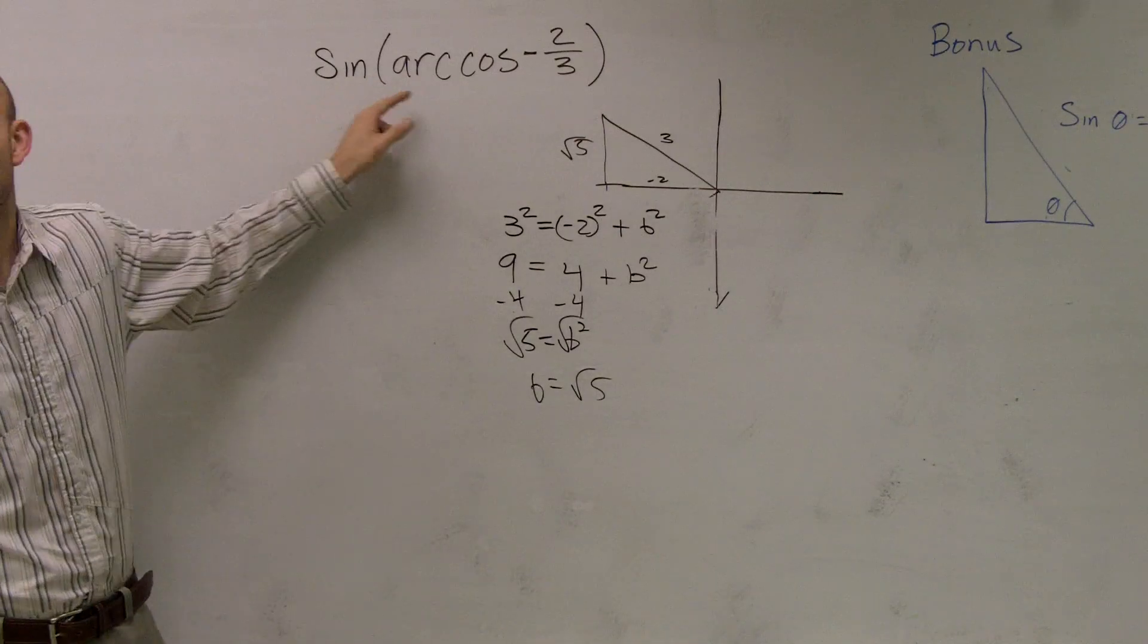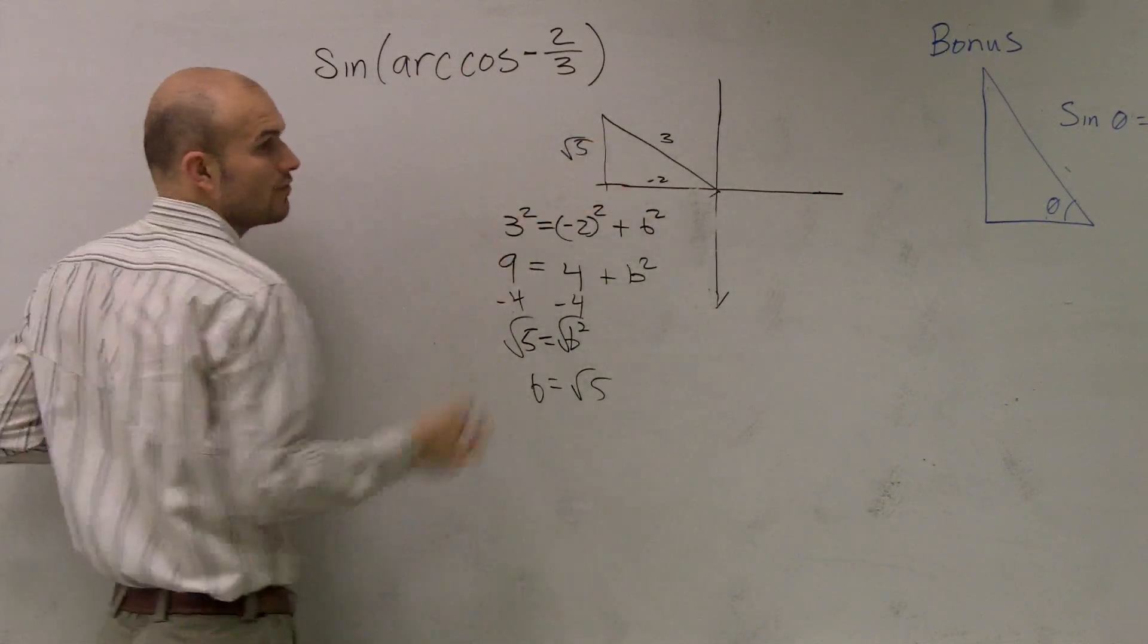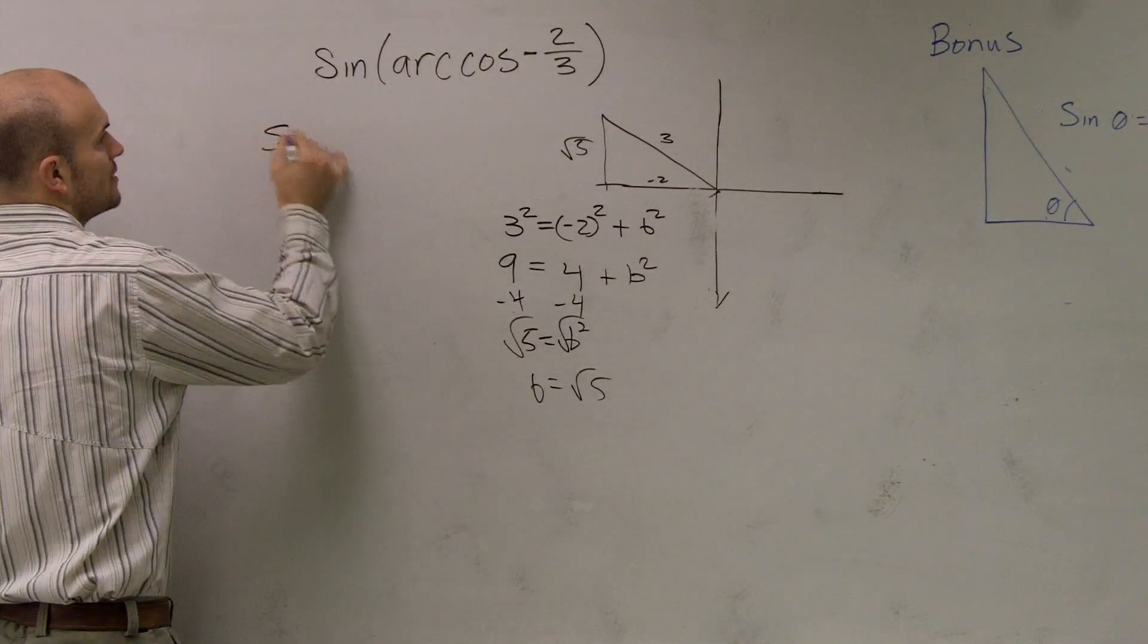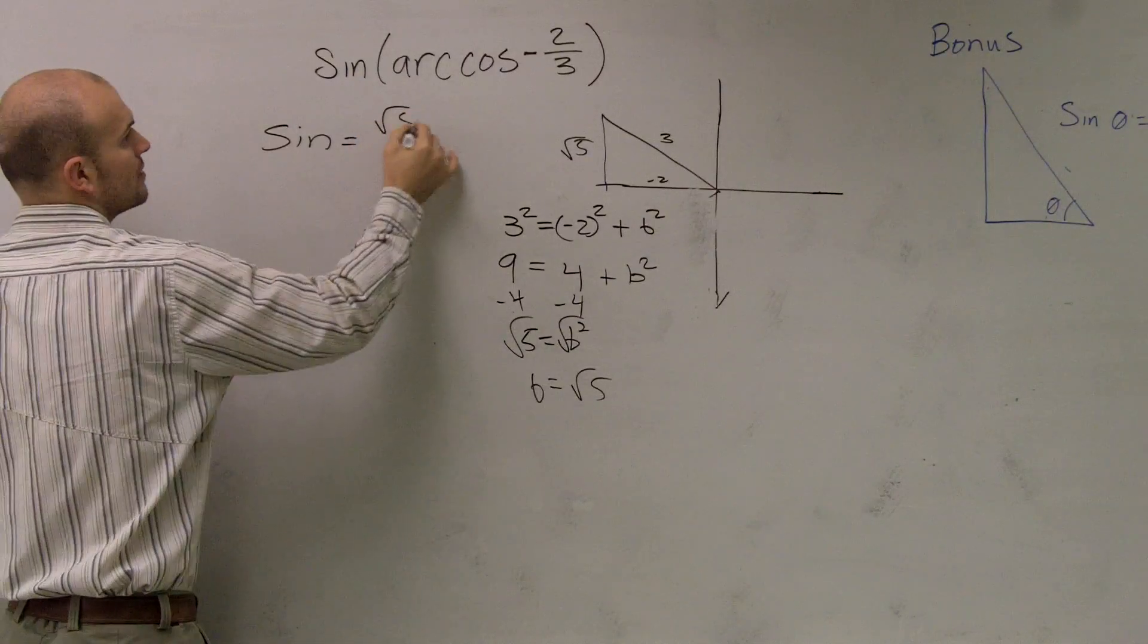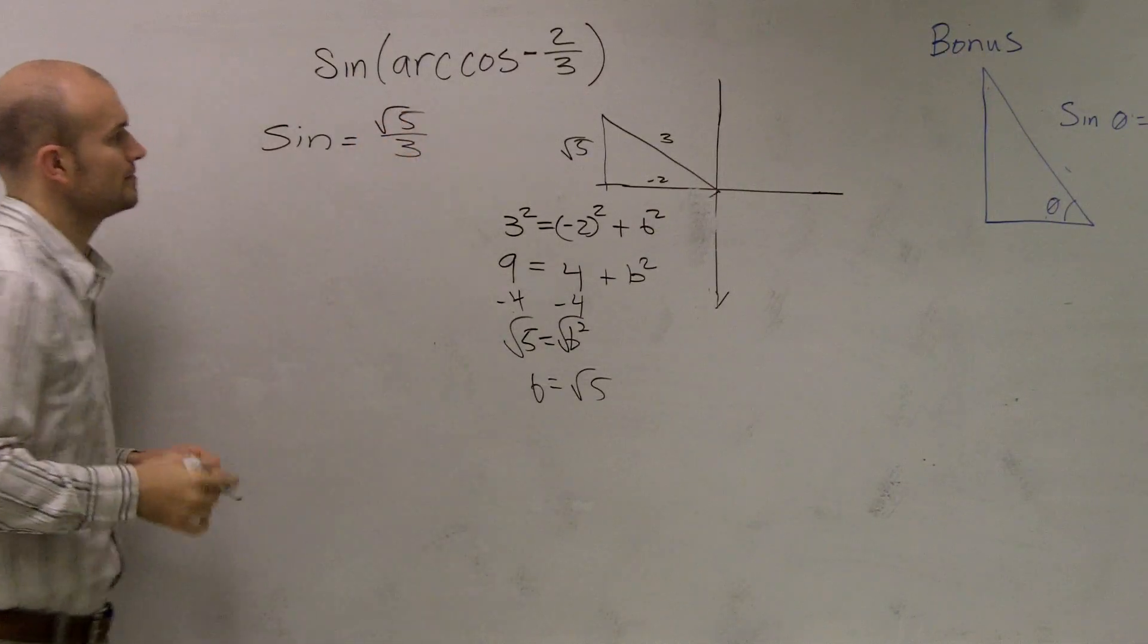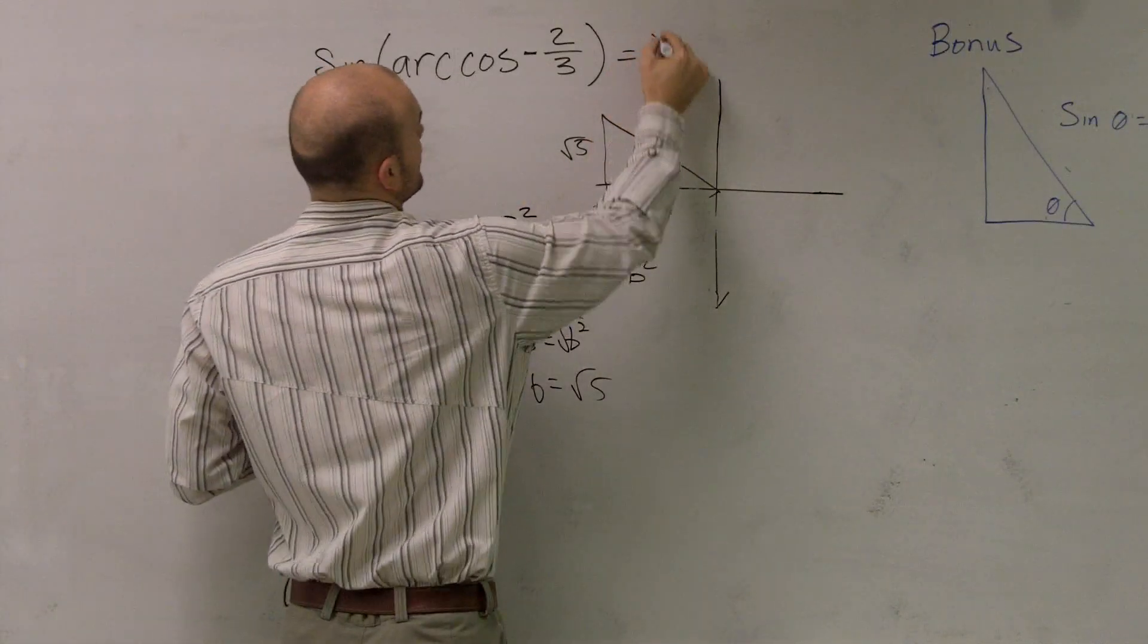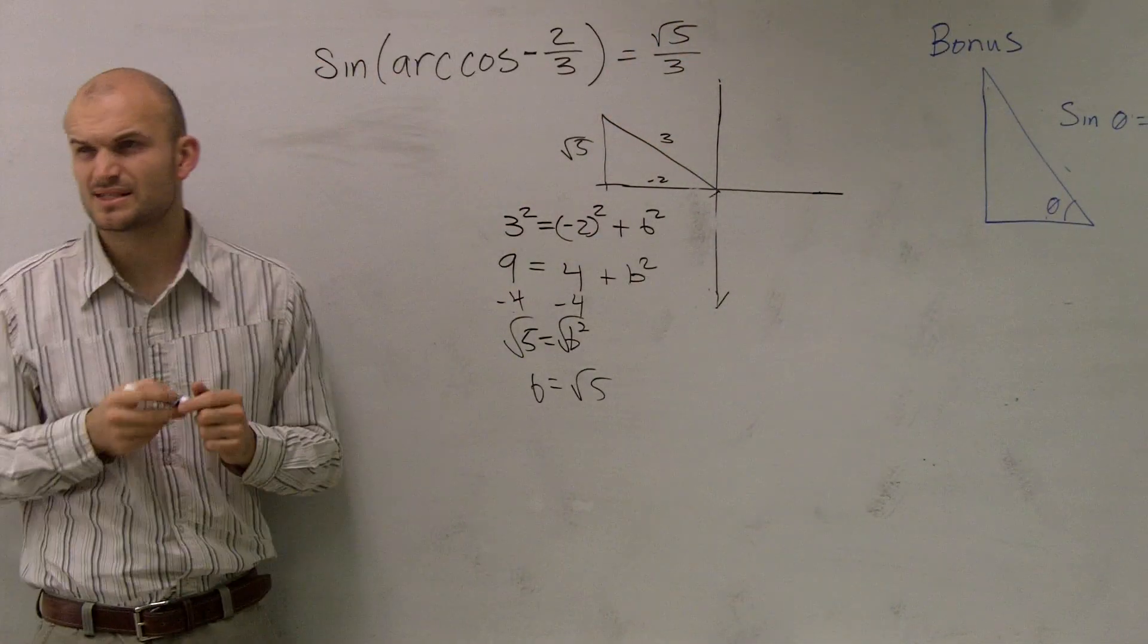Then it says I need to find the sine using this. So the sine is going to be your opposite over your hypotenuse or your y over your hypotenuse. So sine is going to be √5 over 3. Sorry, I should probably just read it. There you go. Because you're evaluating. Make sense?